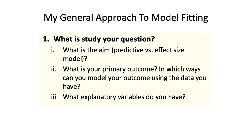Before you start anything, you're going to want to know what the aim of your study is. Why are you building this model? Is it a predictive or effect size model? This will definitely influence variable selection. What is your primary outcome and how is it measured? This determines which type of regression you'll use: a continuous outcome means linear regression; binary means logistic; a rate or count means Poisson; and survival or time-to-event means Cox regression. And you also want to think about which explanatory variables are going to be important.